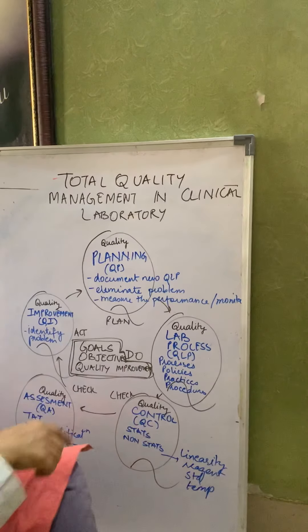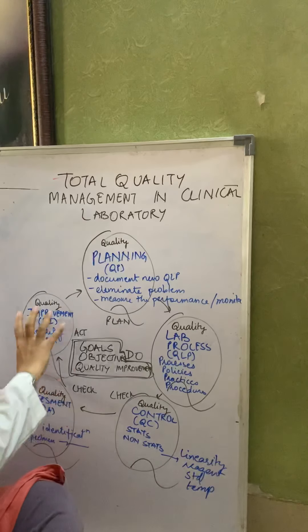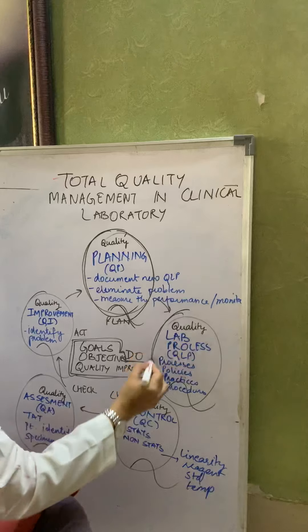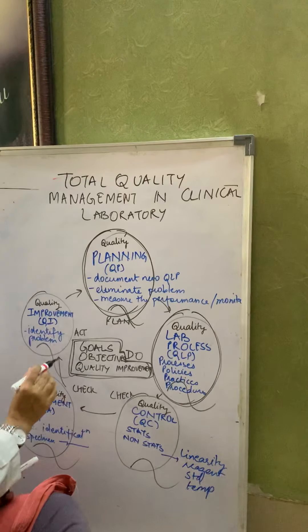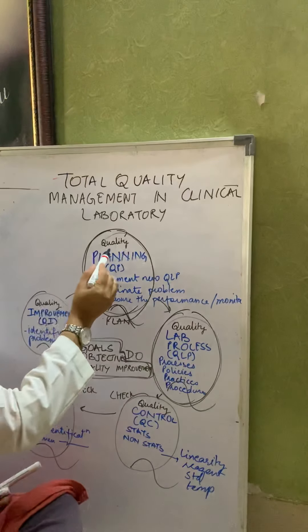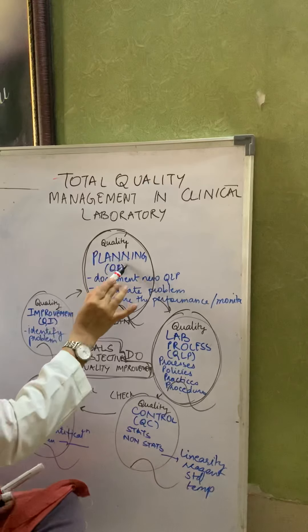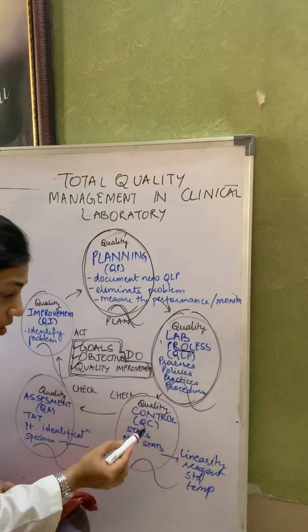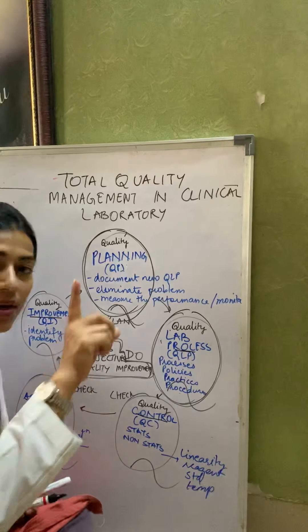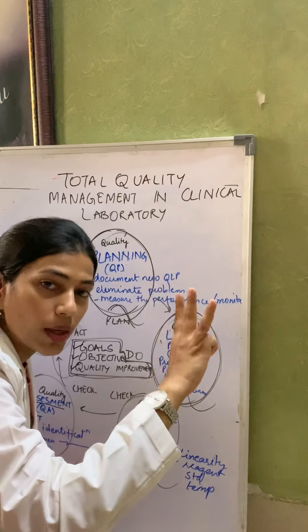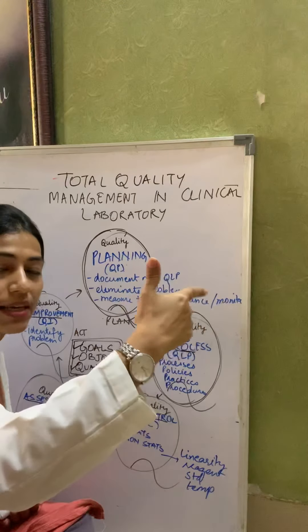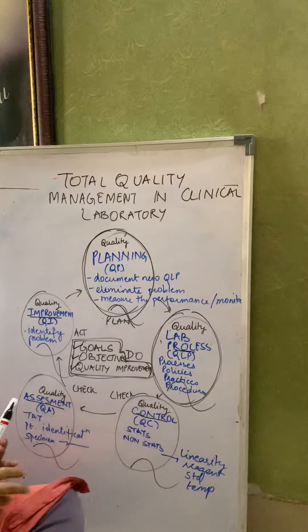On the whiteboard, we place five Q's. These five Q's are: the first Q is Quality Planning, the second Q is Quality Laboratory Processes, the third Q is Quality Control, the fourth Q is Quality Assessment, and the fifth Q is Quality Improvement. These five Q's help achieve the goals, objectives, and improvement of the laboratory.